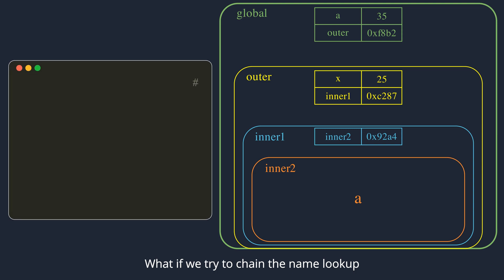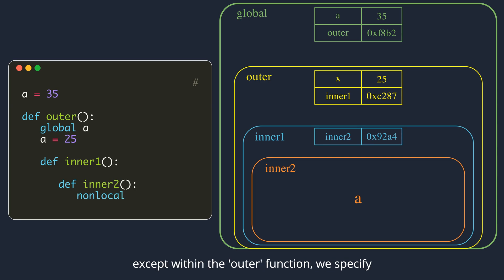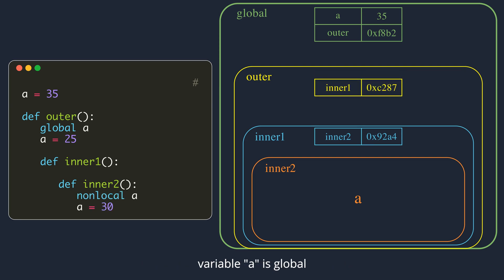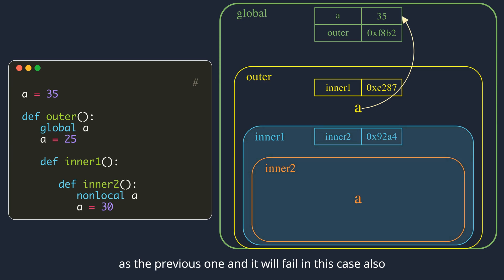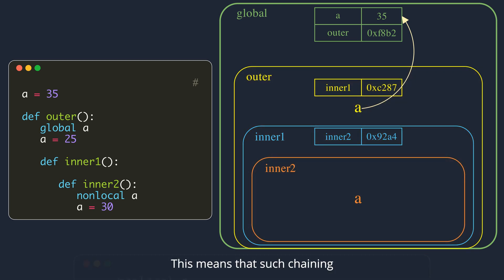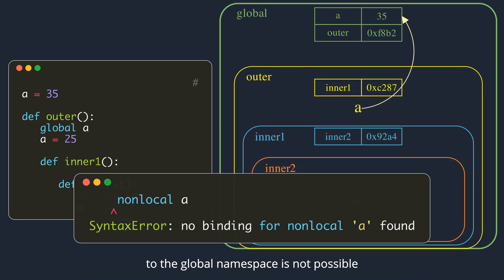What if we try to chain the name lookup to the global namespace? This example code is the same as the previous one, except within the outer function we specify that variable a is global. The lookup for nonlocal a will happen the same as the previous case and will fail. This means that such chaining to the global namespace is not possible.